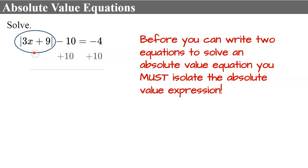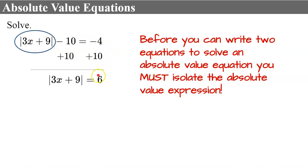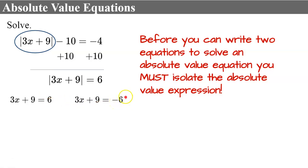I'm going to do the inverse of subtract 10 and add 10 to both sides, which gives me the absolute value expression of 3x plus 9 is equal to 6. Negative 4 plus 10 is 6. Now I know the absolute value of this expression must equal 6, so what is inside can be equal to 6 or equal to negative 6, because the absolute value of negative 6 is 6.